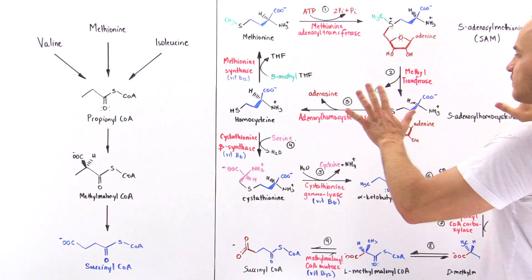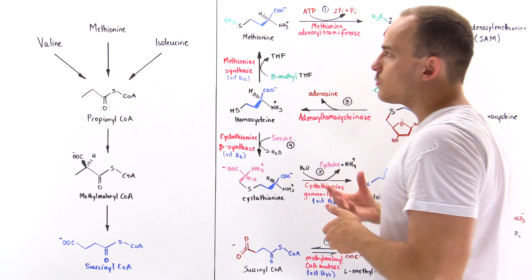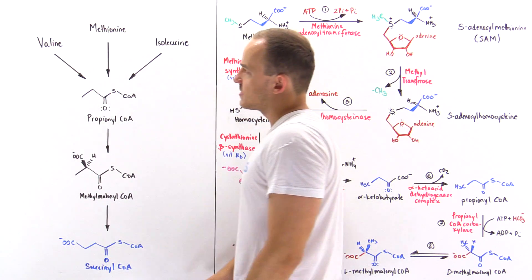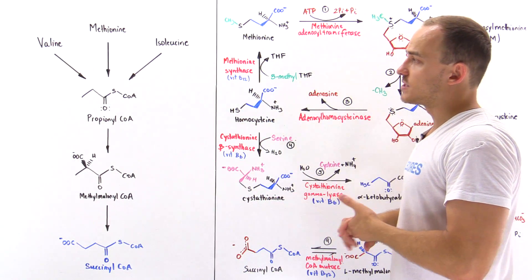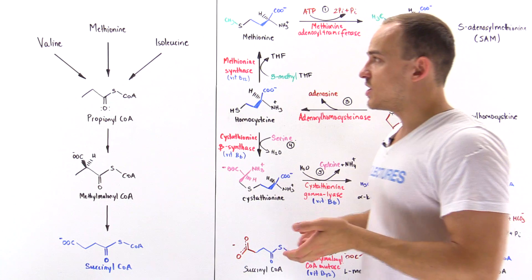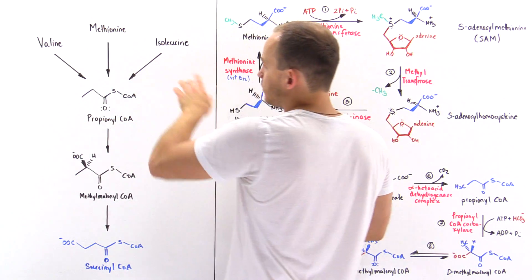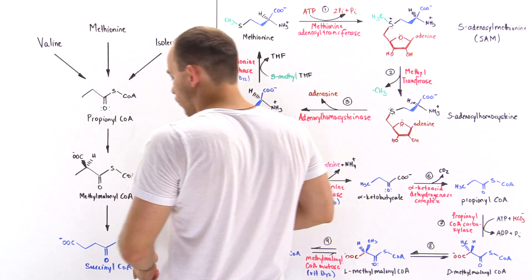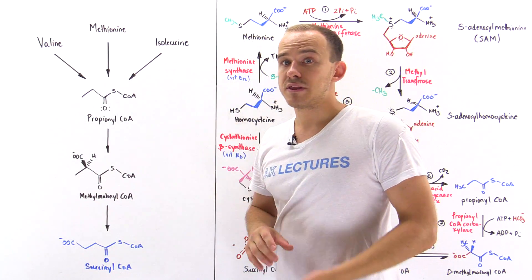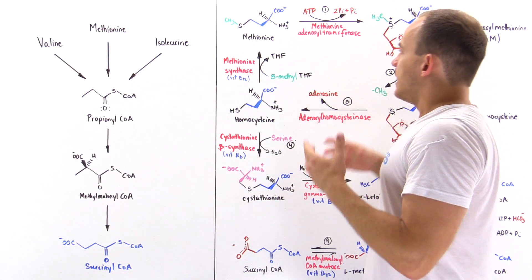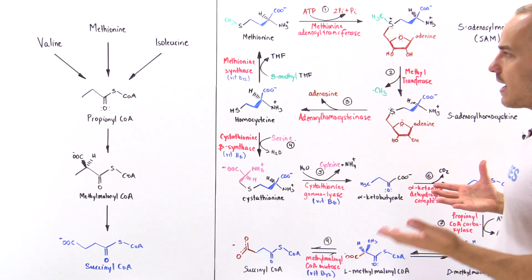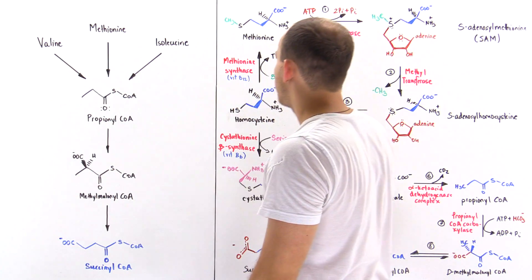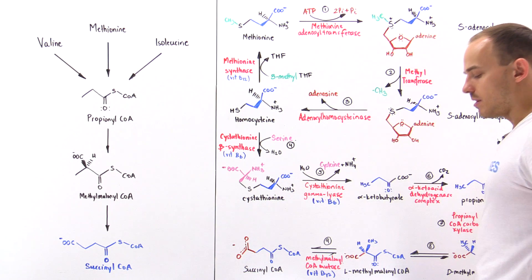What I've outlined on the board is the pathway by which we essentially transform methionine into succinyl coenzyme A, and this will be the focus of this lecture. We're not really going to look at valine or isoleucine, but you should know that these amino acids can also be transformed into succinyl coenzyme A, just like methionine can. There are a total of nine steps that take us from methionine to succinyl coenzyme A.